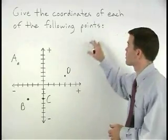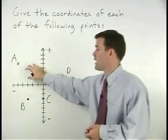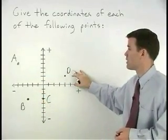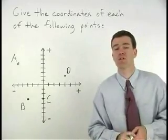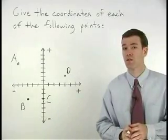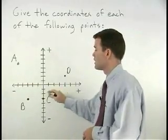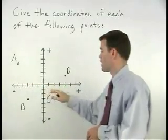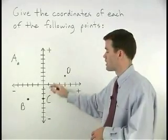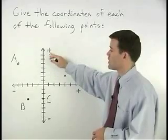Here we're asked to give the coordinates of each of the following points: A, B, C, and D. When finding the coordinates of a given point, be very careful with your signs. Remember that on the x-axis, left means negative and right means positive. And on the y-axis, down means negative and up means positive.